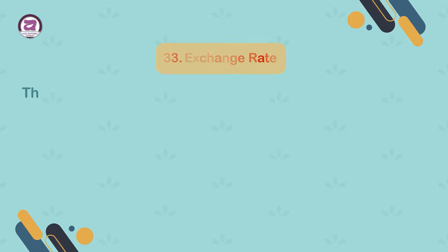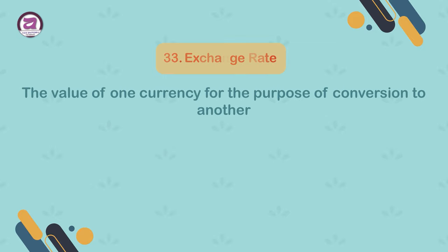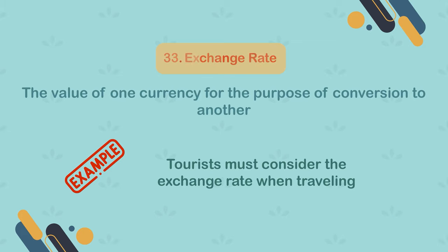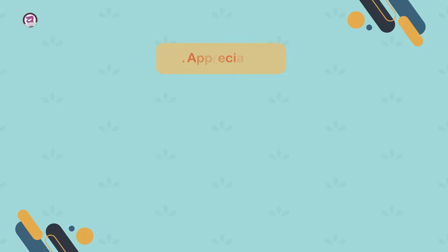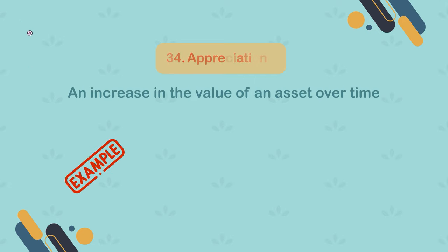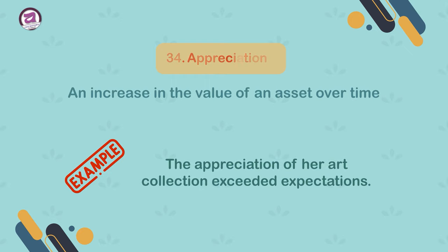33. Exchange rate. The value of one currency for the purpose of conversion to another. Example: tourists must consider the exchange rate when traveling abroad. 34. Appreciation. An increase in the value of an asset over time. Example: the appreciation of her art collection exceeded expectations.